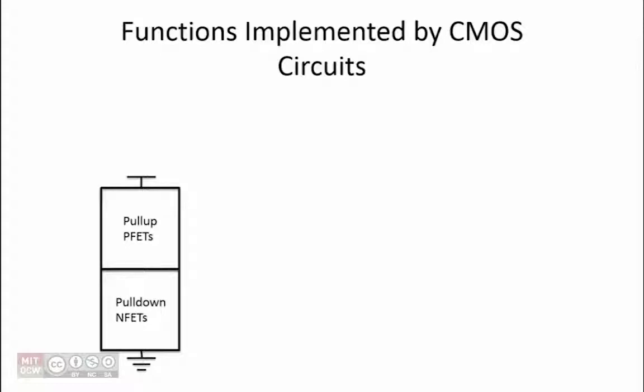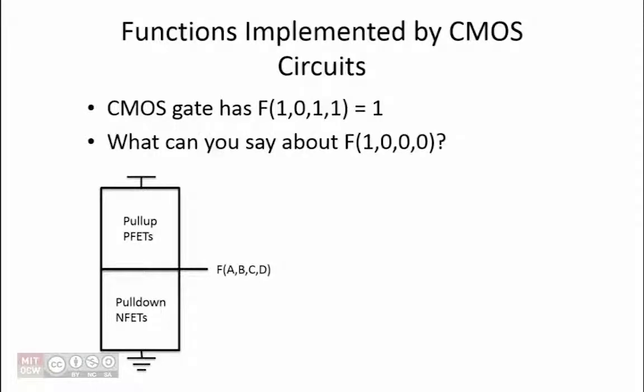In our example, our gate computes f of A, B, C, and D. It is observed that f(1,0,1,1) equals 1. With that information, what can you say about the value of f(1,0,0,0)?